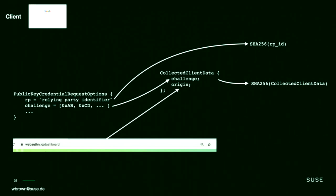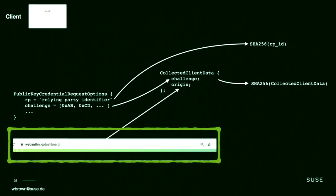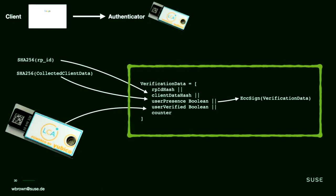The data sent into the authenticator comes from two sources. The first is the credential request options, which includes the relying party identifier — the domain name of the website you are visiting. The second part is the origin, which is collected not from the relying party but from our web browser. This means we have in our collected client data a true and realistic view of what the user is seeing. It doesn't matter if it's a homonym attack — we are embedding the exact bytes of that domain name into the collected client data that will be signed.